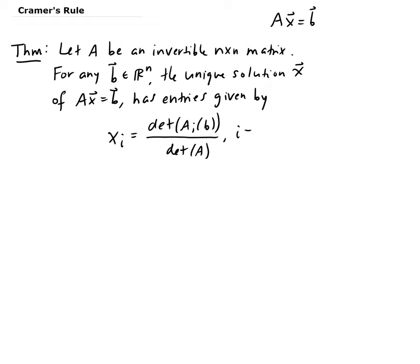And that's going to apply for whatever the size of the solution vector is — from i equals 1 to n. That's the theorem for Cramer's Rule.